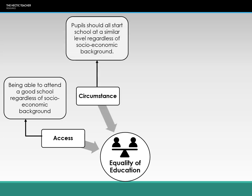There's also equality of circumstance, which states that all students should start school at a similar level regardless of their socio-economic background. There should be very little discrepancy between students when they actually start school — in terms of reading, writing, social skills, fine motor skills, and things like that. It's about creating an equal starting point for all students.